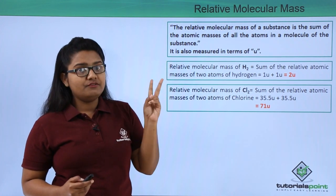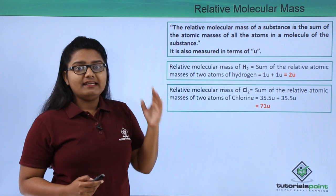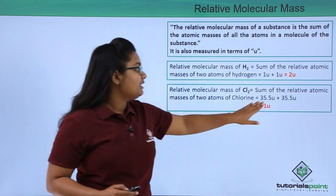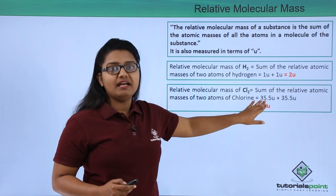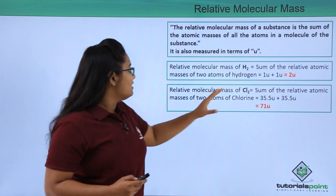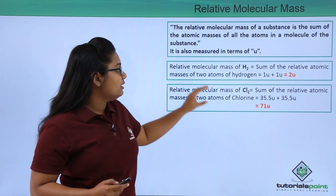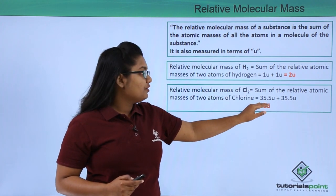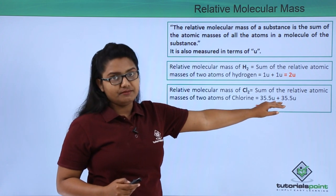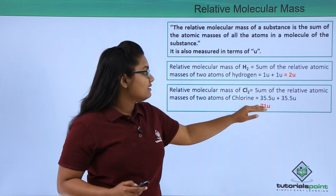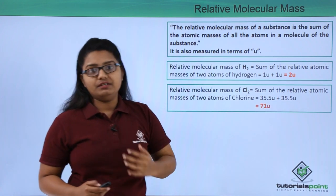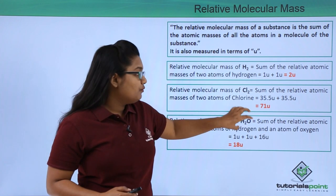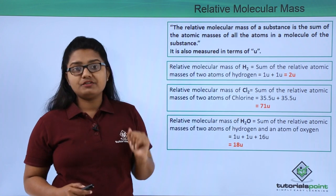In the same way, we can find the relative molecular mass of a chlorine molecule, which also has two chlorine atoms, each with a relative atomic mass of 35.5u. So the relative molecular mass of a chlorine molecule is 35.5u + 35.5u = 71u.